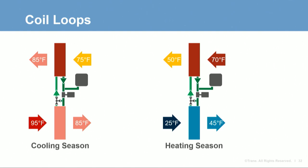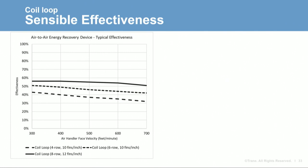In the heating season, warm exhaust air heats the fluid in the coil, which is circulated to the coil in the ventilation airstream, and the outdoor air is heated. Looking at individual coil performance, a chart shows sensible effectiveness on the vertical axis and coil face velocity on the horizontal axis. Three coils are plotted: an 8-row 12 fins per inch coil at top, a 6-row 10 fins per inch coil in the middle, and a 4-row 10 fins per inch coil at the bottom.